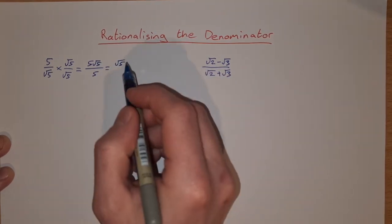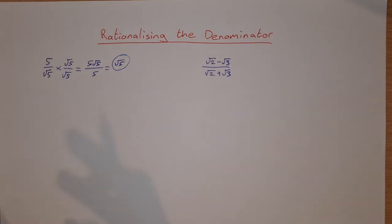So now we have written that as a rational fraction, or we have rationalized the denominator rather. So 5 over root 5 is equal to root 5.